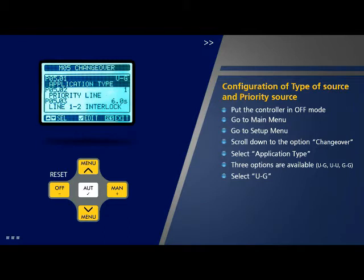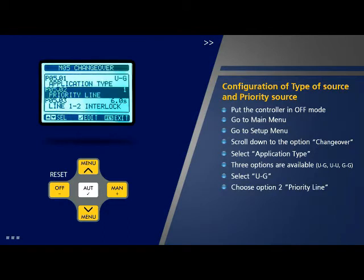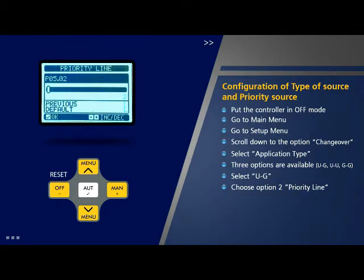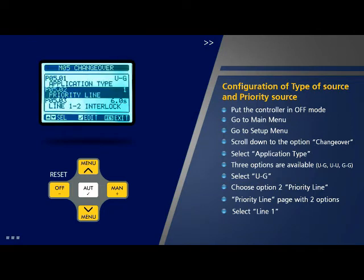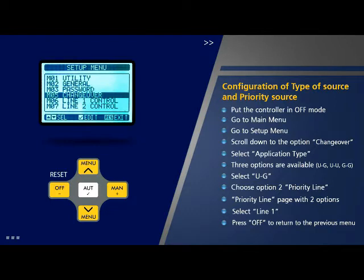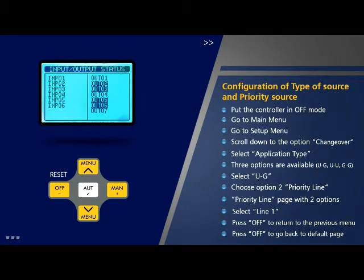To select priority line, choose option 2 which is 'Priority Line' on the change over page and press OK. The priority line page will display two options: 1 and 2. Select the priority line as per site requirements, for example line 1, and press OK. Press off to return to the previous menu. Press off again to go back to the default page.